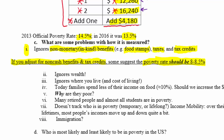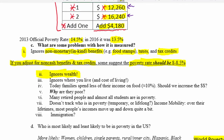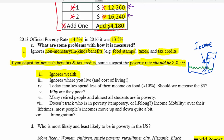Another problem with measuring poverty is that it ignores wealth. Wealth is a stock or pool of money — like a bathtub that accumulates if more money flows in than flows out. It is possible that a household has a lot of wealth — owning several houses, boats, cars, property, and money in the bank — yet because their income falls below the poverty limits, that household could be defined as in poverty, even though these are people we probably shouldn't be worried about.